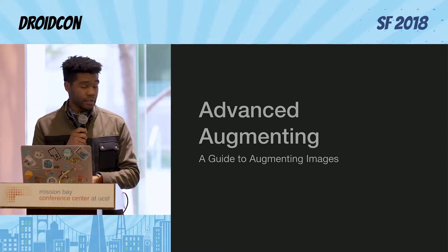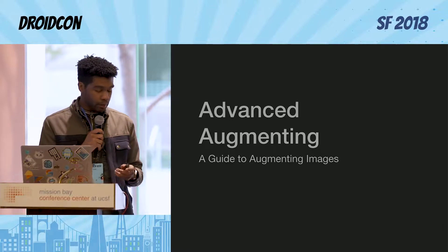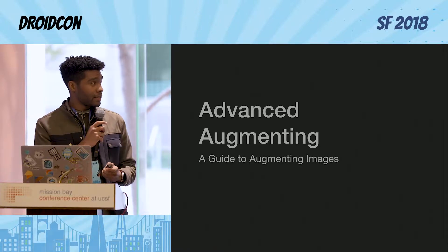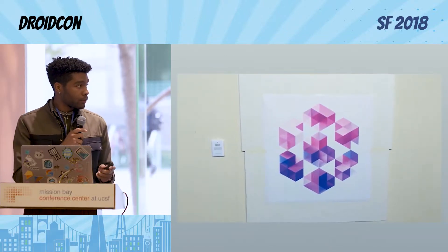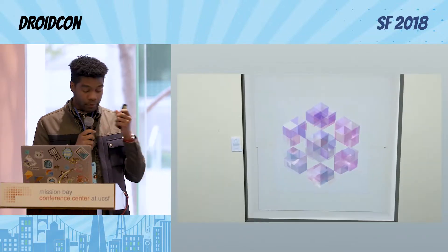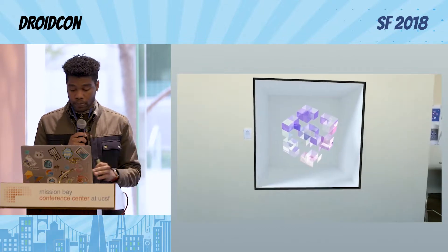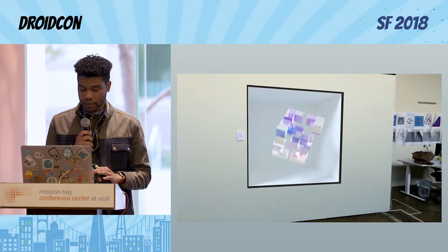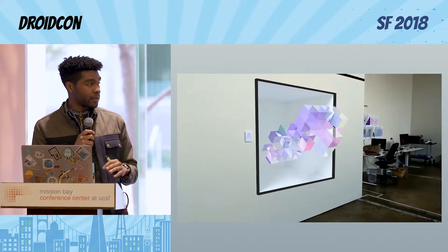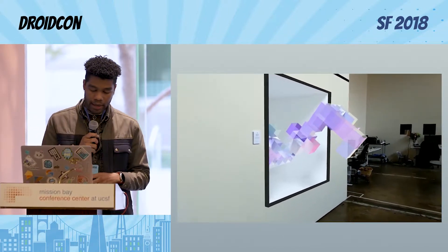The easiest way to accomplish this is going to be to use Sceneform. Here's Google's example — it's also a really good example. I promise this is a lot simpler than what it looks like, but it does involve the prior two dependencies I talked about: both Sceneform and ARCore.